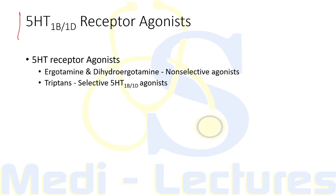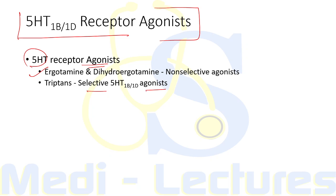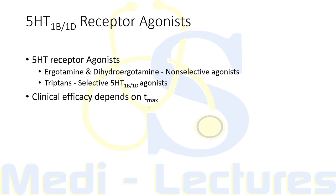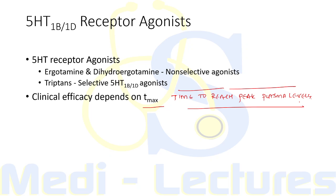The 5HT receptor agonists can be non-selective — ergotamine and dihydroergotamine — or selective 5HT 1B/1D agonists known as triptans, and 5HT 1F agonists known as ditans. Clinical efficacy depends on Tmax — time to reach peak plasma levels — which is more important than potency, half-life, or bioavailability. Faster-acting analgesics are therefore more effective than slower-acting ones in migraine.